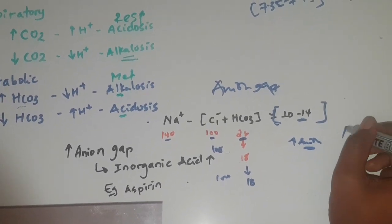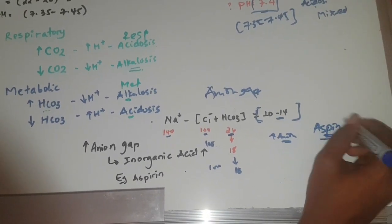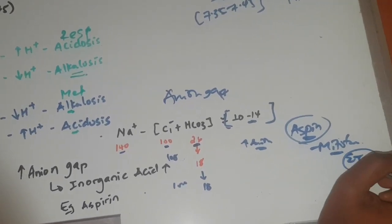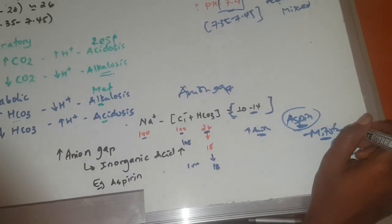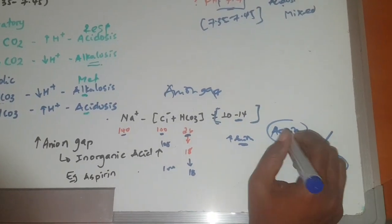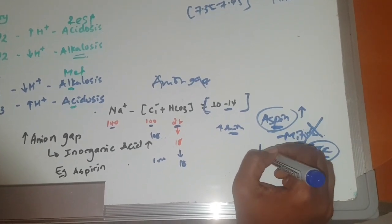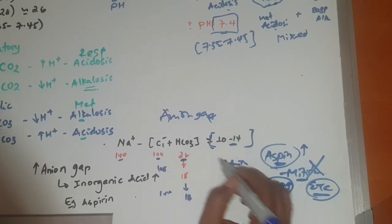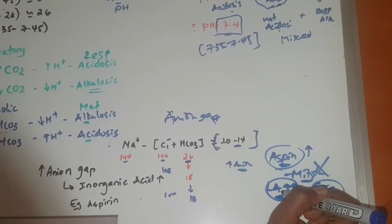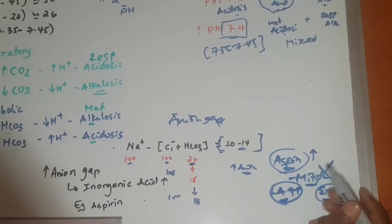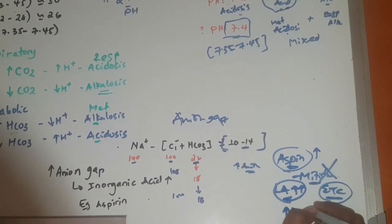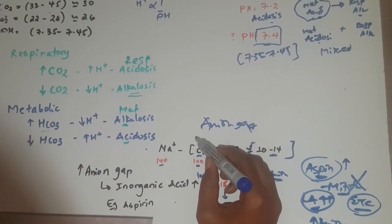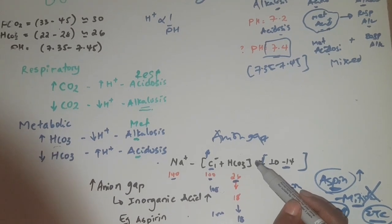A typical example is aspirin overdose. Aspirin is a mitochondrial toxin — it affects the electron transport chain and respiration. In aspirin overdose, lactic acid accumulates as a non-organic acid. This organic acid is not compensated by chloride, and it acts as a strong acid, leading to an increased anion gap metabolic acidosis.